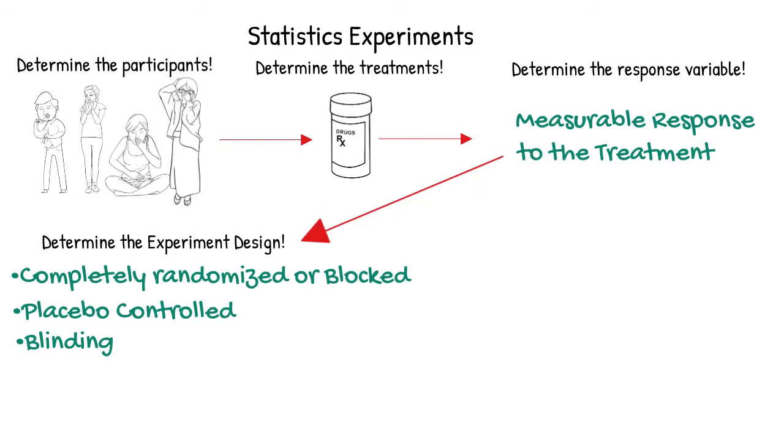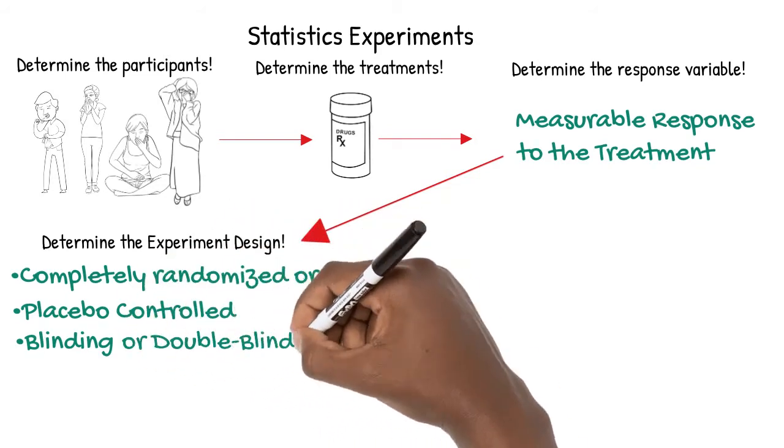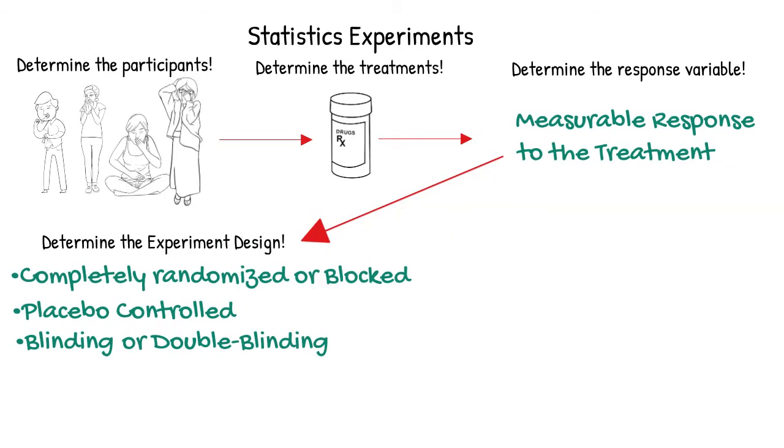Blinding means that those involved in the experiment aren't able to see the information that might influence the outcome of the experiment. An experiment is said to be double-blinded if those influencing the results, like the participants, and those evaluating the results, like the doctors, are both blinded.